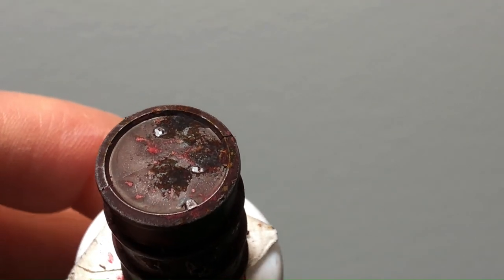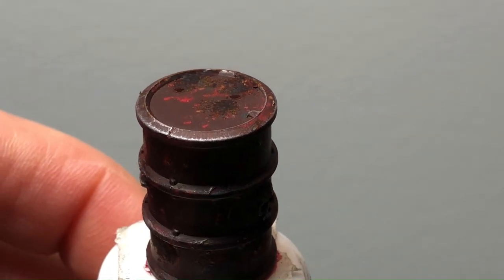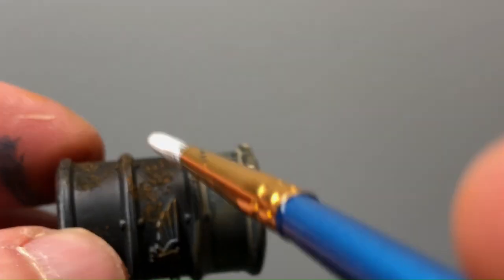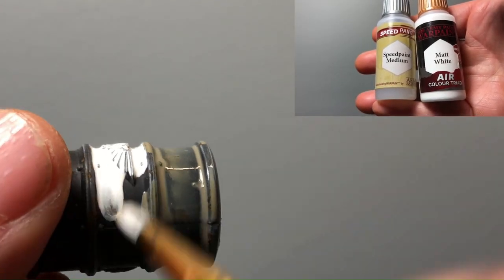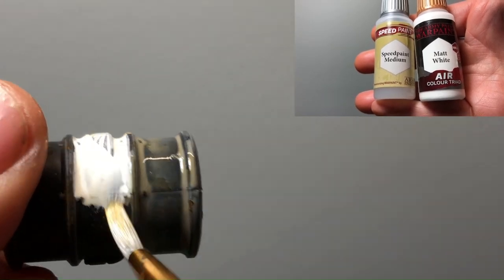Because it's going over Speed Paint 1.0, the rust itself also reactivates the Speed Paint. It tends to dilute the Speed Paint and you don't necessarily get the full rust appearance.